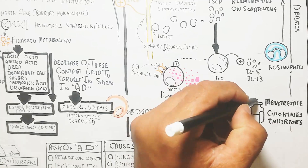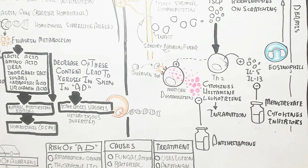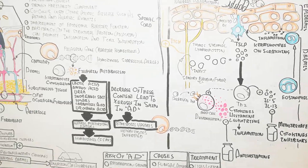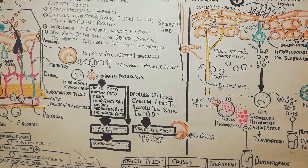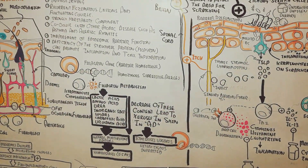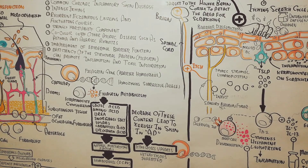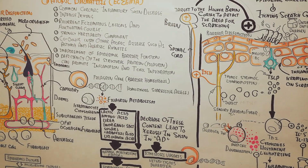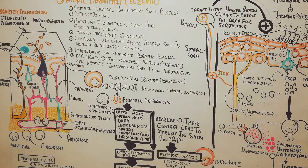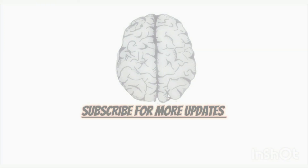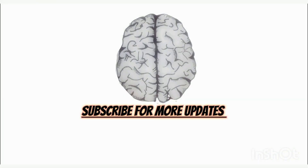Methotrexate is used as a cytokine inhibitor, and inhibiting interleukins 4, 5, and 13 leads to treatment of atopic dermatitis and eczema. I hope this explanation of eczema and atopic dermatitis makes sense. Thanks for watching, see you in the next video.